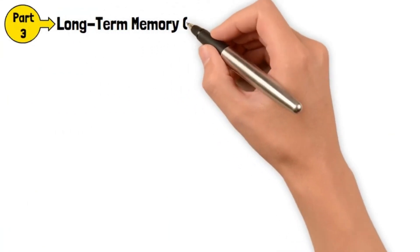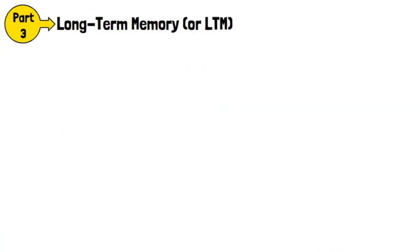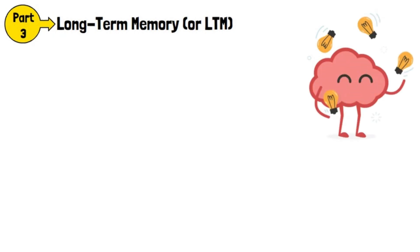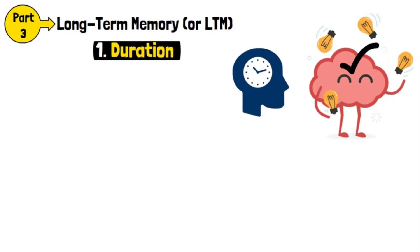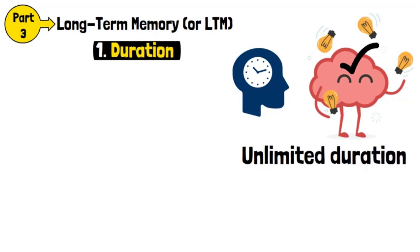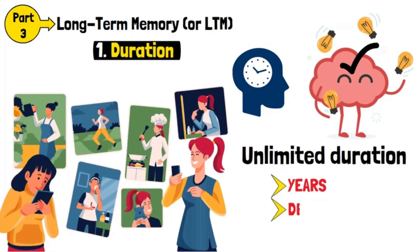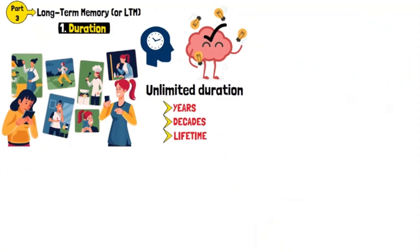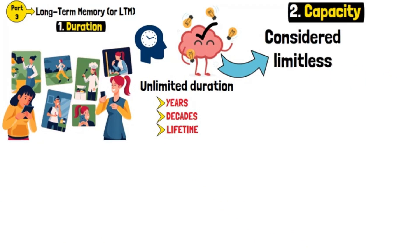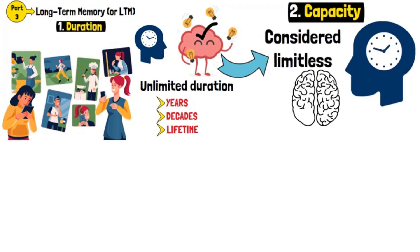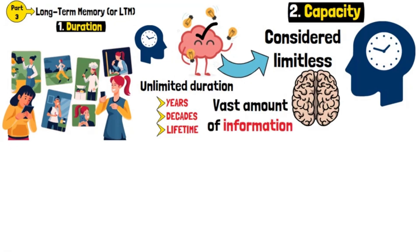Long-Term Memory, or LTM, is where information is stored for extended periods, potentially a lifetime. Unlike short-term memory, long-term memory is thought to have an unlimited duration — memories can last for years, decades, or a lifetime. The capacity of long-term memory is also considered limitless, holding a vast amount of information ranging from personal experiences to factual knowledge.